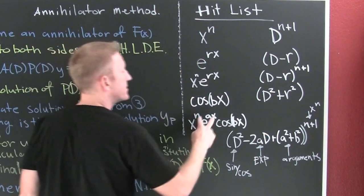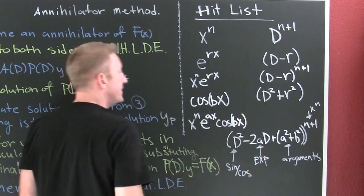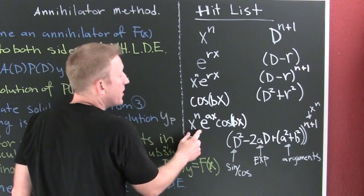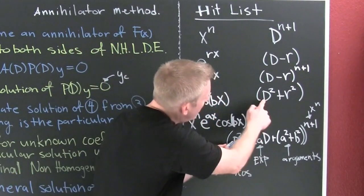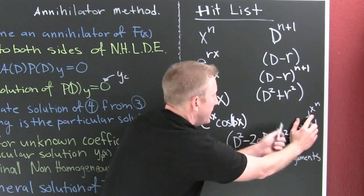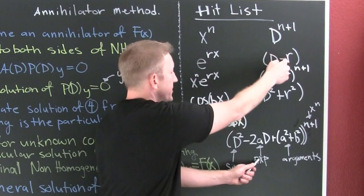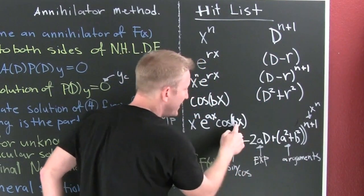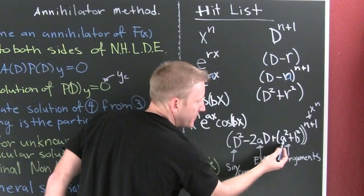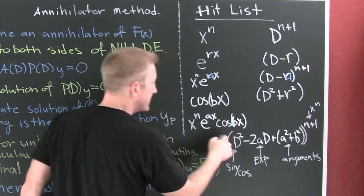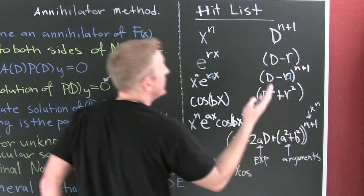These are all familiar functions from differential equations. If you have cosine or sine, the operator (D² + b²) is going to annihilate it. If you put it all together — exponentials, cosines, and polynomial parts — then the combined operator kills it. When we separate out the 'a' and regroup, it factors into something that kills the cosine and sine, kills the exponential, and takes care of the arguments because you need one more.